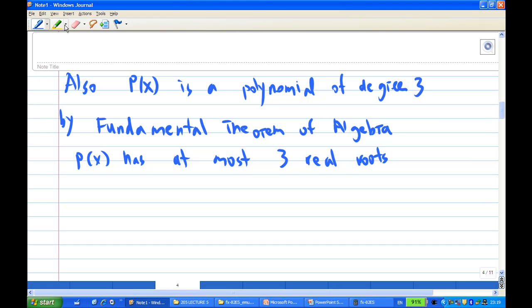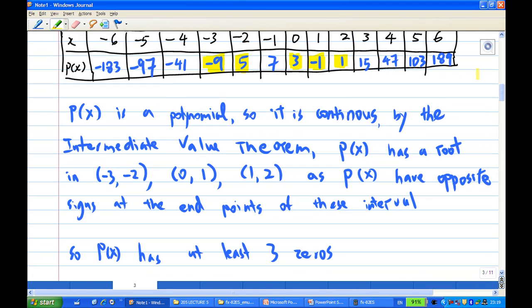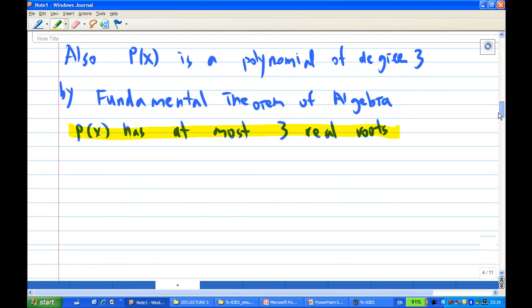So now, we can combine our findings. P(x) has at most 3 real roots by fundamental theorem of algebra. And, P(x) has at least 3 roots by the intermediate value theorem. Therefore, we conclude.